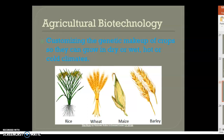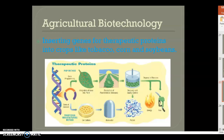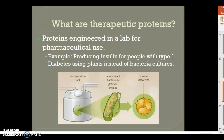Animal feed products are enhanced with proteins to boost nutrition and control diseases. Just like humans get sick, animals get sick as well. These proteins boost nutrition, keep diseases down, and allow the animal to fight off diseases. We also insert genes for therapeutic proteins into crops like tobacco, corn, and soybeans — these are proteins engineered in a lab for pharmaceutical use.